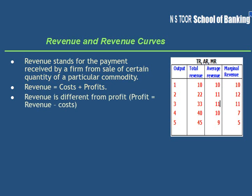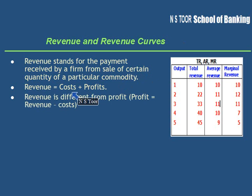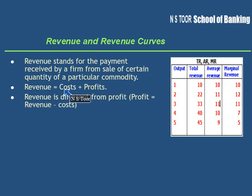Now, what is revenue equal to? Revenue covers two things: one, it covers cost, and another, it covers normal profits. Hence, revenue is equal to cost plus profits.